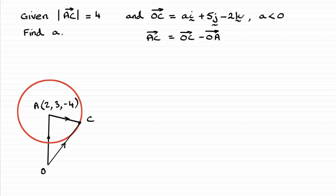O to C we know is this vector, and we've already got the vector O to A. It's going to be 2, 3, minus 4, if written as a column vector. So if you do that, writing those column vectors in, doing the subtraction, you should end up with A minus 2, 2, and 2.